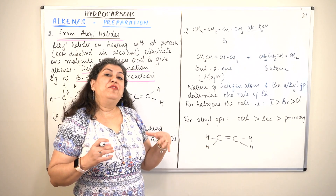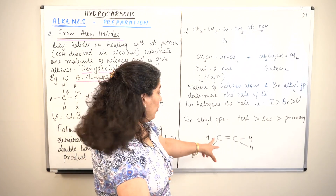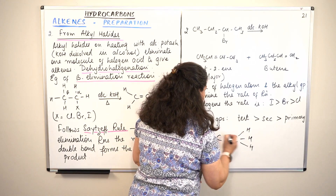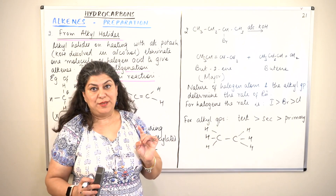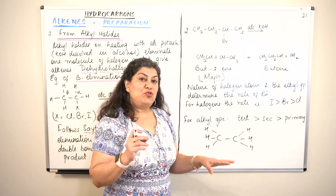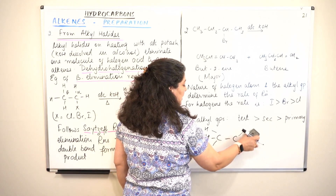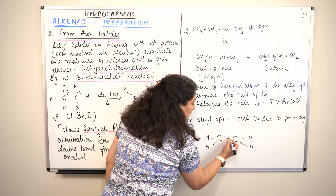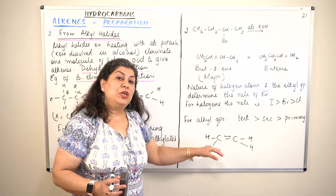The opposite of addition is elimination. If I want to prepare an alkene, the two carbon atoms must have a single bond between them, and you have to remove two of the attached atoms. Both carbons each lose one atom, get back the electrons they shared with that atom, then share those electrons with each other, resulting in the formation of an alkene.